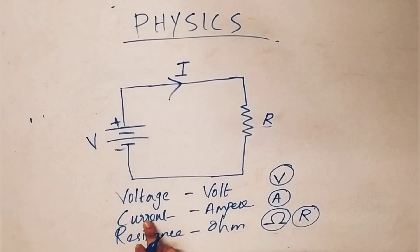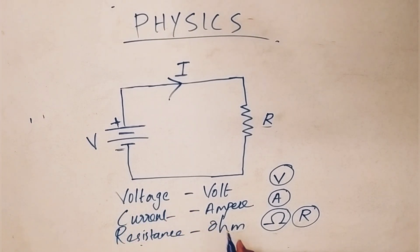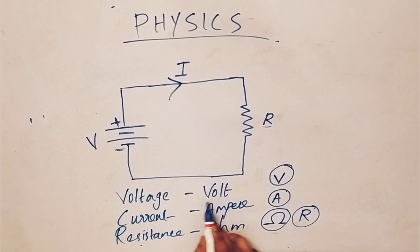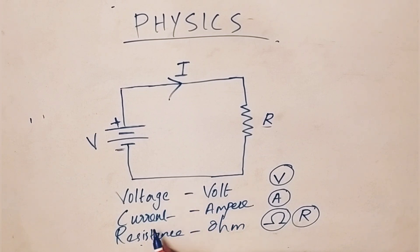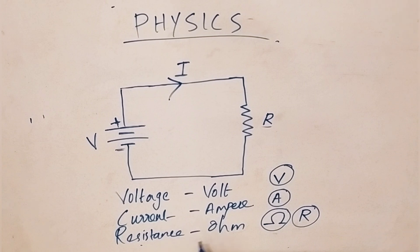Voltage, current, resistance. Voltage unit is Volt. Current unit is Ampere. Resistance unit is Ohm. Okay, clear.